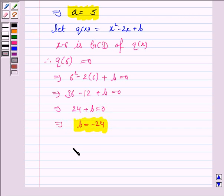Hence, value of a is 5 and the value of b is minus 24. So, this completes the question and the session. Bye for now. Take care. Have a good day.